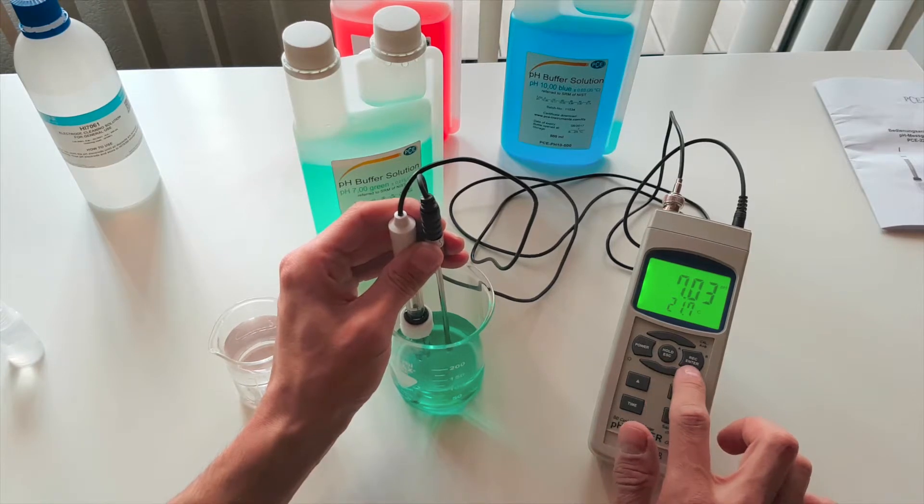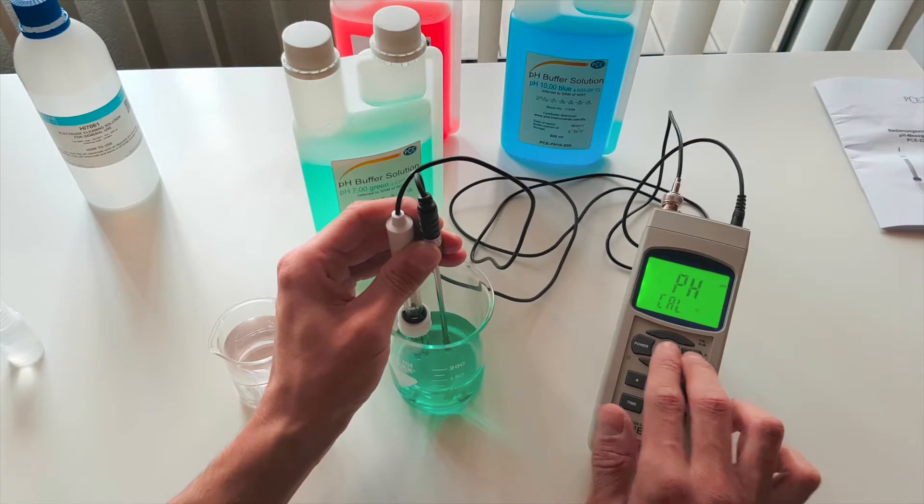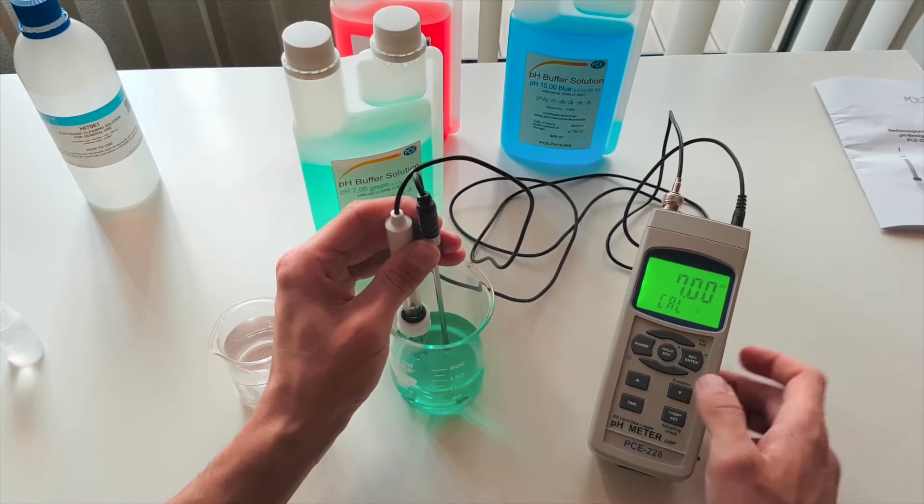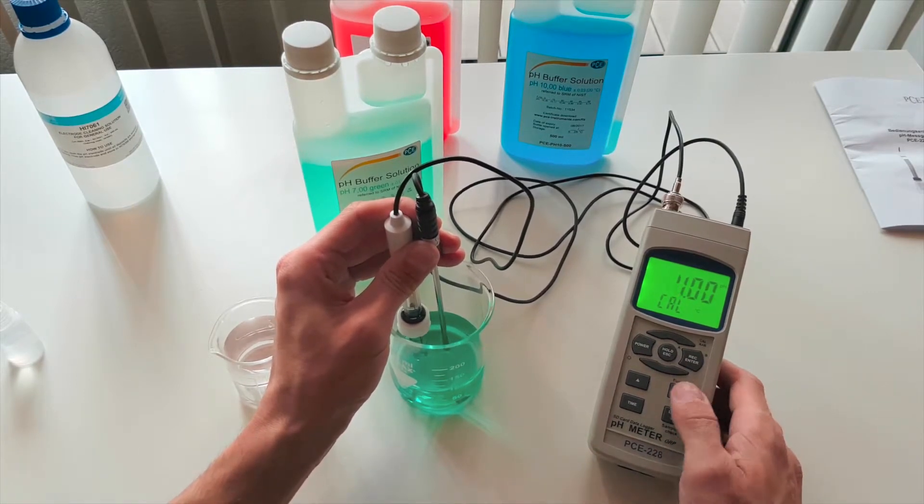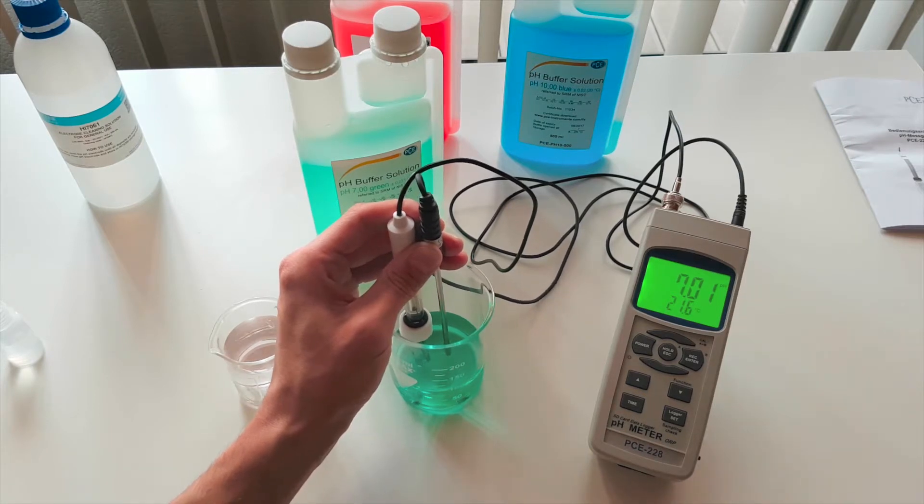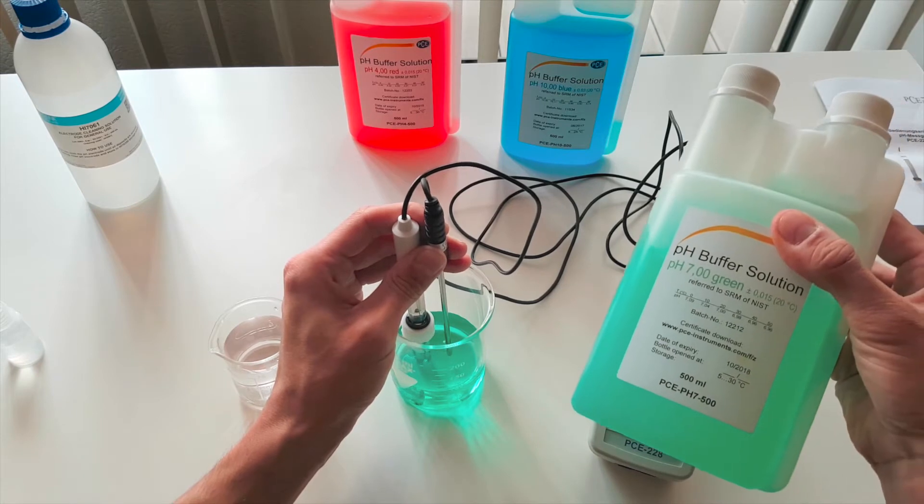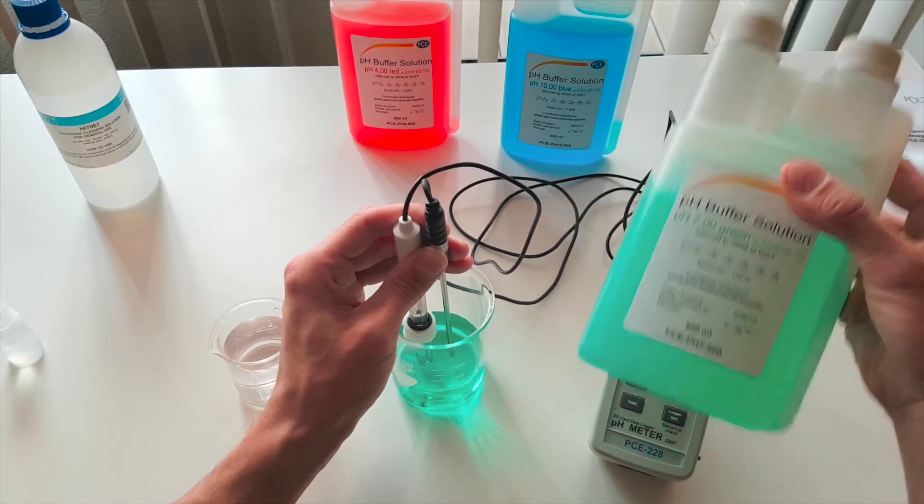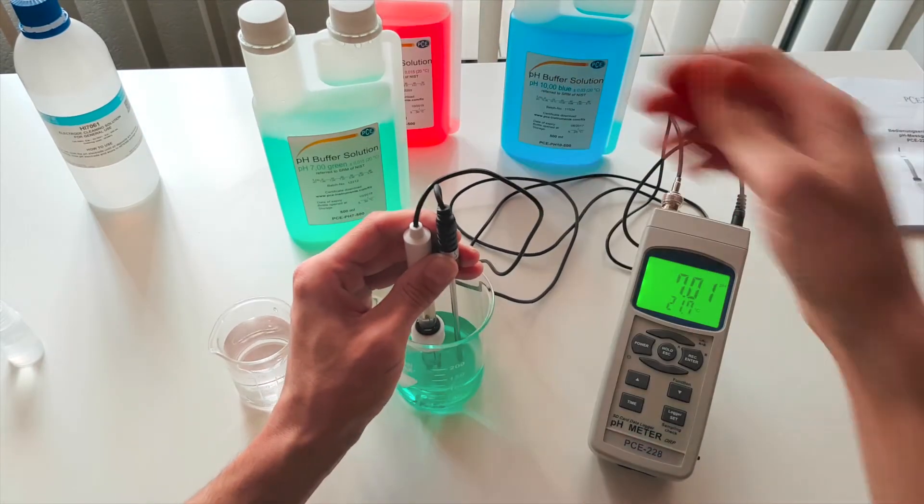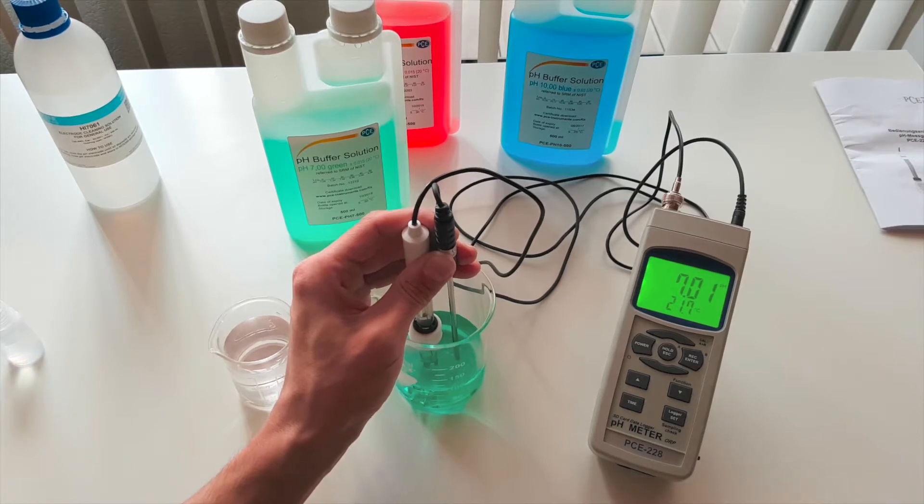For this you have to push the hold key and reset key together. And then we come into the calibration mode. Here we can choose pH 7, pH 4, pH 10. We want to calibrate pH 7. Confirm this once with enter. And the device is calibrated. And we know by the fluid we have a possible deviation 0.015. And there are two points after the comma rounded off to 0.01. Correspondingly the device is perfectly calibrated for our measuring.